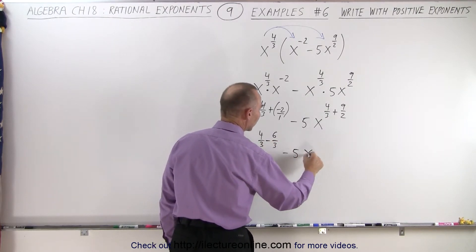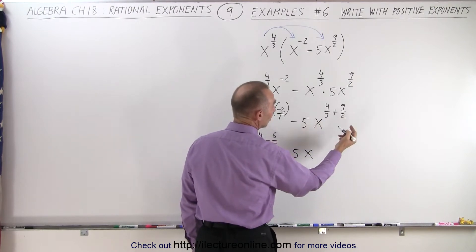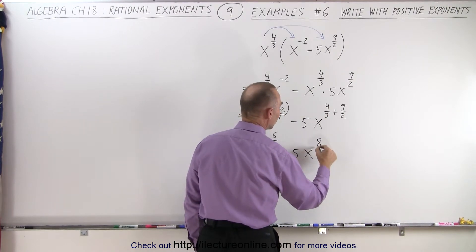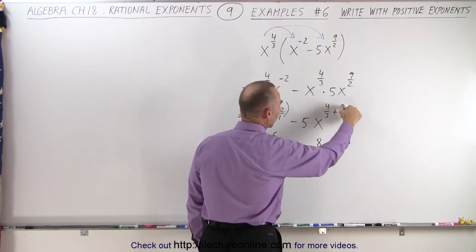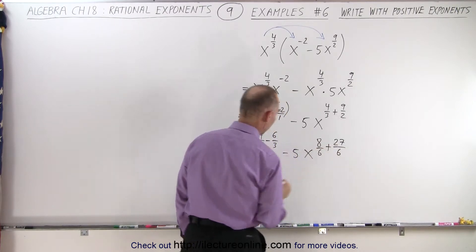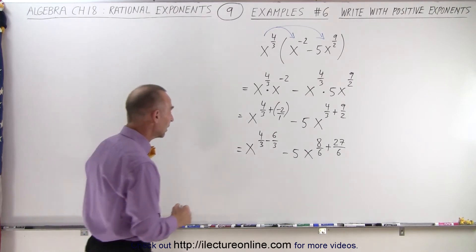Minus 5 times x to the... Notice we also need to have the same common denominator, which is in this case 6. So multiply the top and the bottom by 2, we get 8/6. Plus multiply the top and the bottom by 3, we get 27/6. Now we have both fractional exponents with the same denominator.